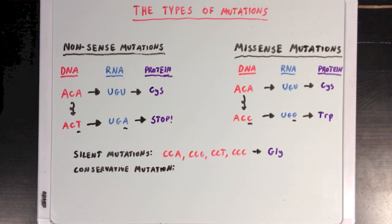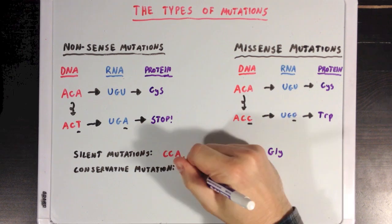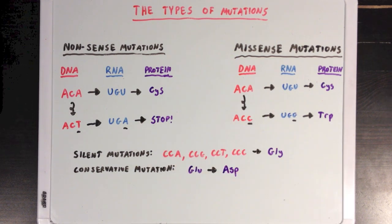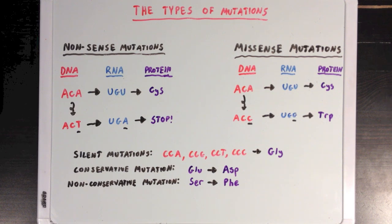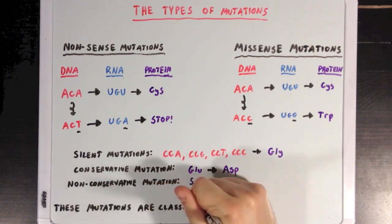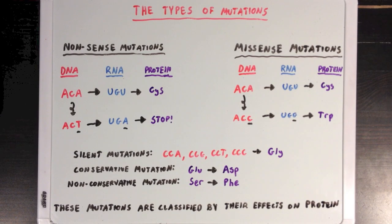Conservative mutations are where the new amino acid is of the same type as the original. For example, glutamate and aspartate are both acidic amino acids, so a mutation that swapped out an aspartate for a glutamate would be a conservative mutation. A non-conservative mutation is one where the new amino acid is of a different type from the original. Here, a serine amino acid — which is a small, polar amino acid — is being replaced with phenylalanine, which is a large, non-polar, aromatic amino acid. This is an example of a non-conservative mutation since serine and phenylalanine are different types of amino acids. Note that all of these mutations are classified and named for how they affect the resulting proteins, and aren't really named for how they affect the cell's DNA.